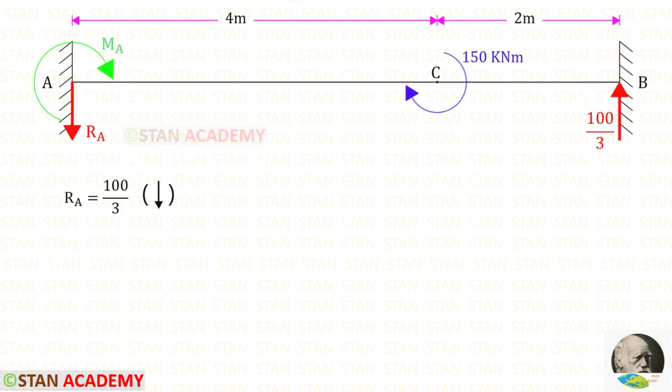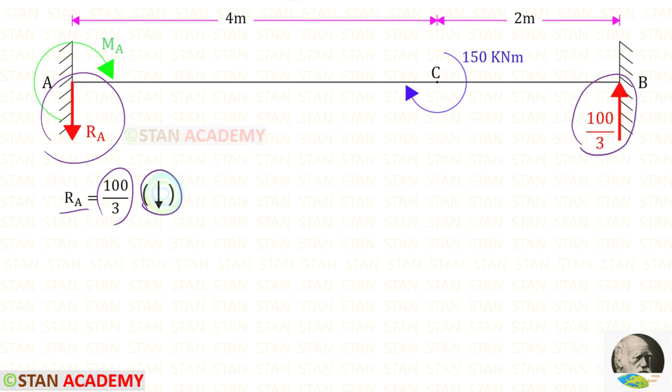Now let us find RA. We have already found RB acting upwards. Since there is no external vertical load on this beam, the values of RB and RA will be equal in magnitude but opposite in direction. Since RB acts upward, RA must act in the downward direction.